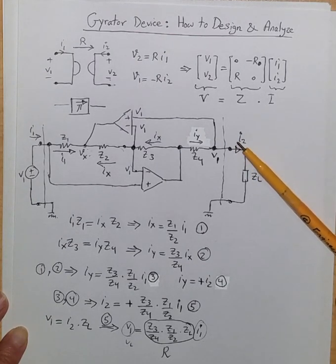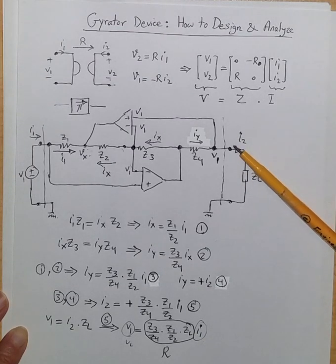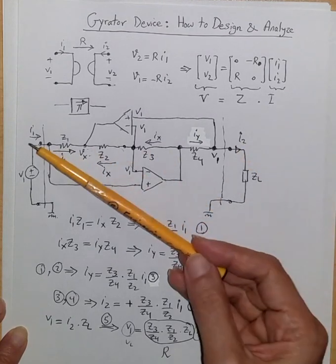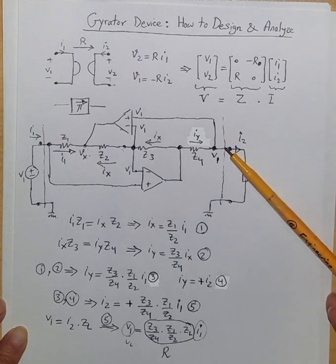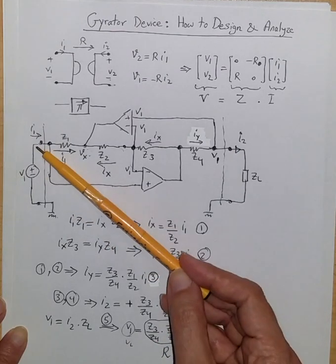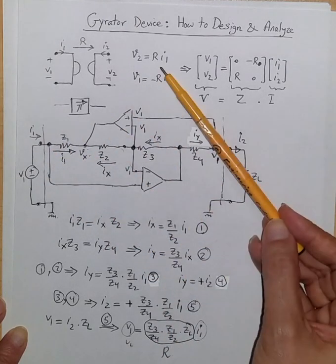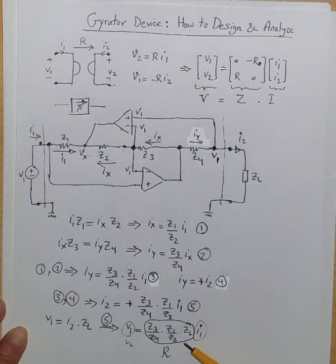So you can say the voltage at the second port is related to the current at the first port like I1 this way. So V of the second port which is here is equal to R times the current going to the first port. That is exactly representing this relation and you realize a gyrator.